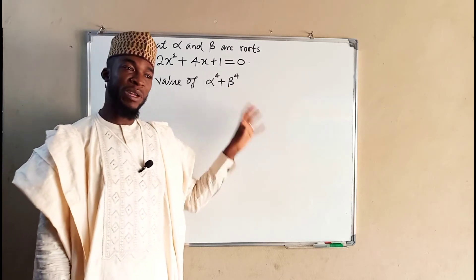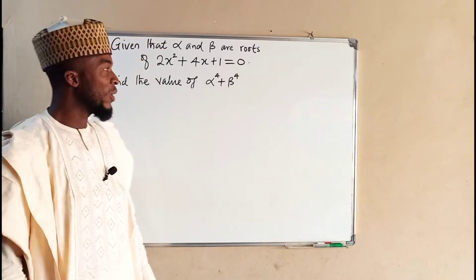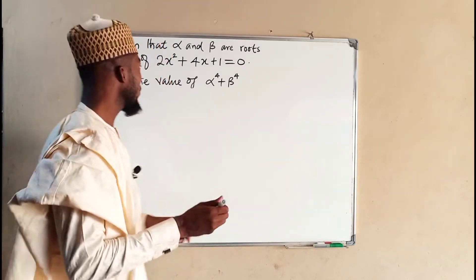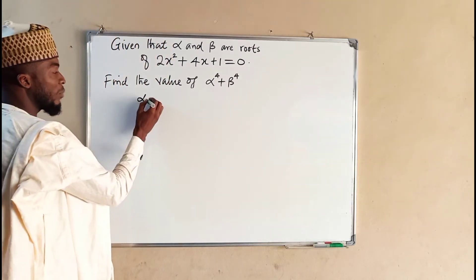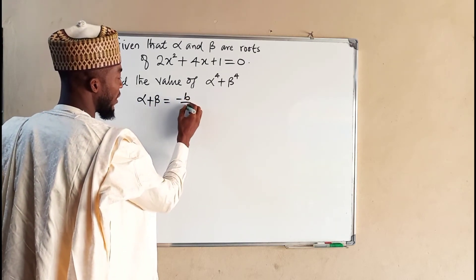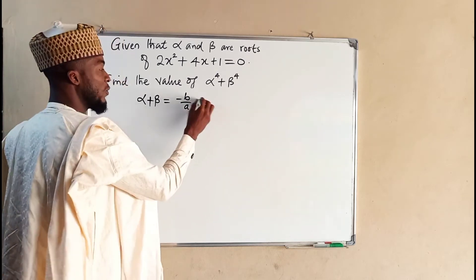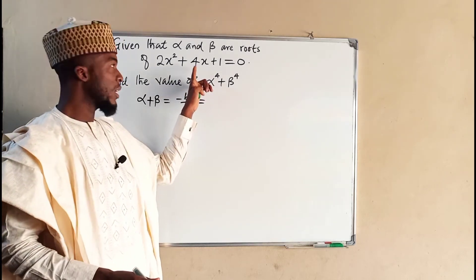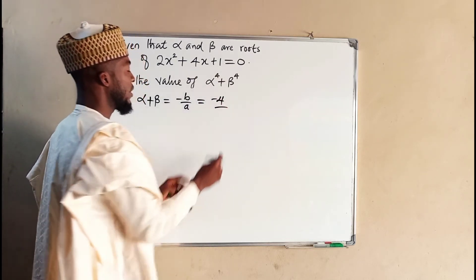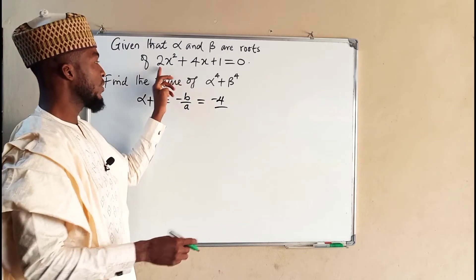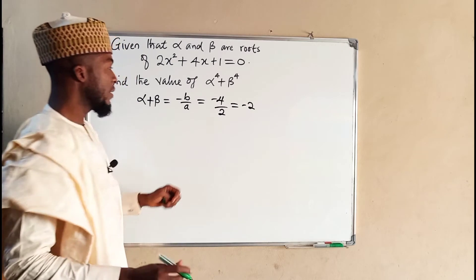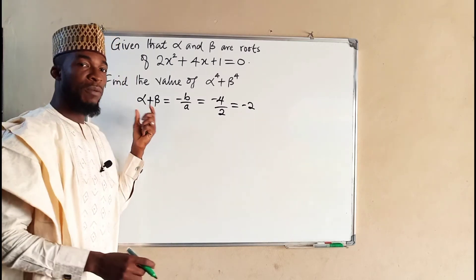Remember, whenever you are given problems under symmetrical functions, all you have to do first is to find the sum and the product of the roots. The sum, meaning alpha plus beta, this is giving us negative b over a. And you know that b is the coefficient of the middle term, which we have here as 4. So we have negative 4 over the leading coefficient a, which is 2 here. If you simplify, you get negative 2. And hence, negative 2 is the sum of these quadratic roots.